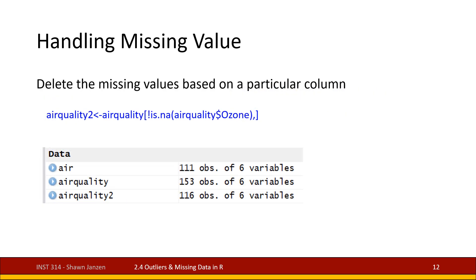Another way is to delete missing values based on a specific column. Here we do airquality[!is.na(airquality$ozone), ] and save that into a new dataset called airquality2. Airquality2 has 116 observations across six variables, compared to the original 153. Note the difference from 'air' which used na.omit: na.omit found other missing values in the dataset and collapsed those out as well.